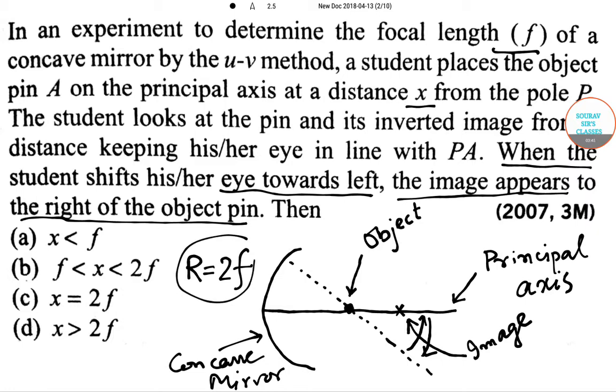Since it is situated in between focus and radius of curvature, the position of X will be in between R, that is actually 2f and f. So option B will be the right answer.